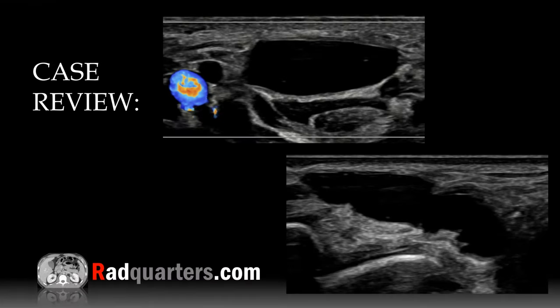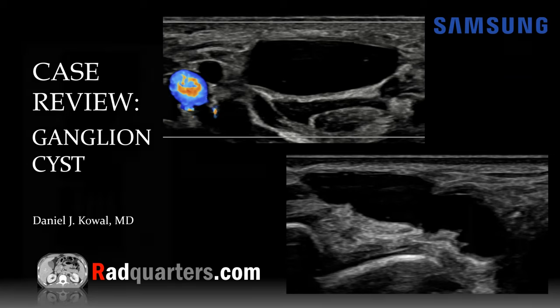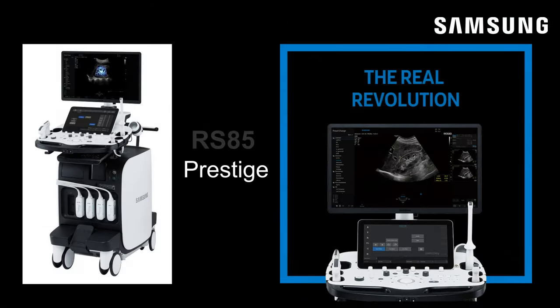Welcome to RadQuarters. Today we'll be talking about ultrasound of ganglion cysts. I'm Dr. Dan Koval, and this episode is sponsored by Samsung Ultrasound. The beautiful images you're about to see were obtained on a Samsung RS-85 Prestige ultrasound unit. I'm going to show you two cases of ganglion cyst of the wrist, highlighting key teaching points throughout, and I'll also review some ultrasound wrist anatomy.